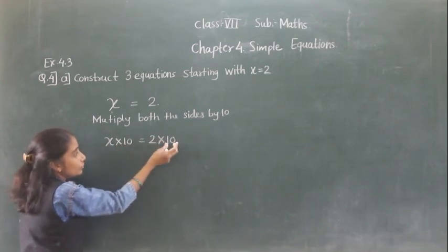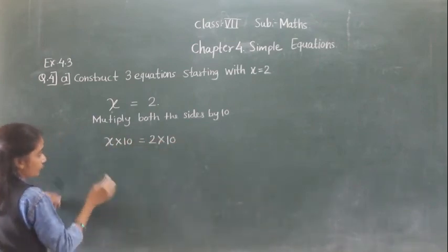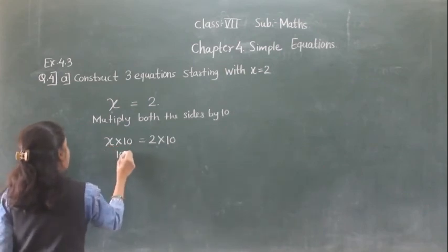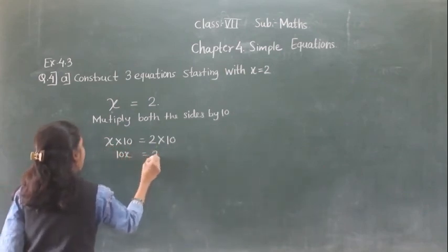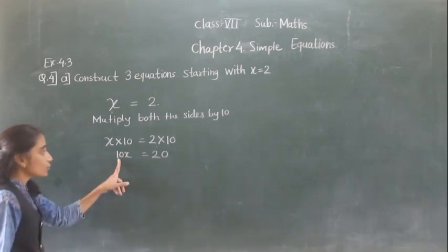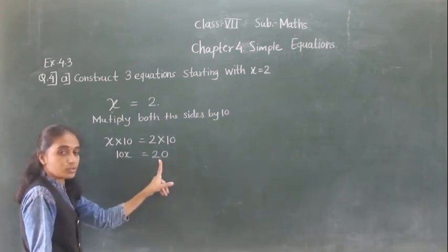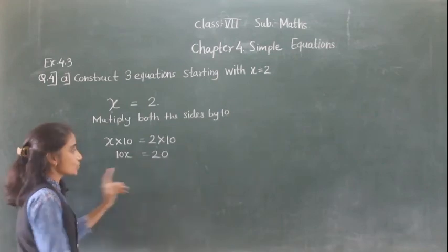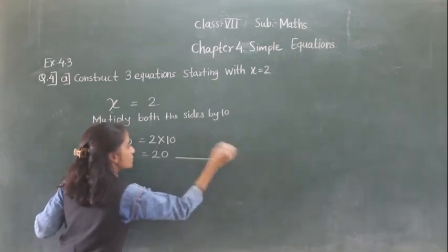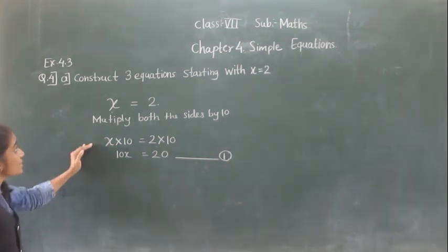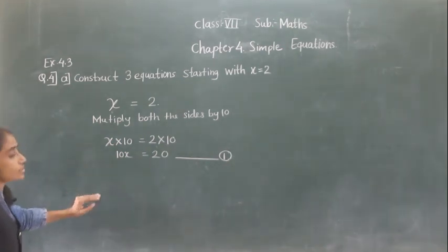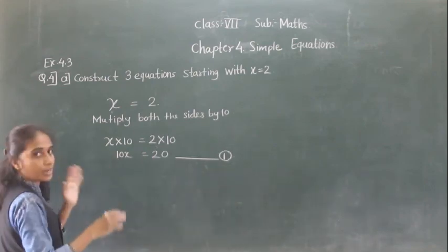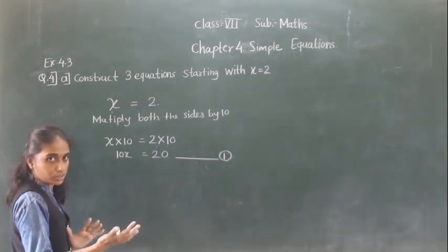Multiply both sides by 10. Left hand side has x, so 10 times x is 10x. Right hand side: 10 times 2 is 20. So the first equation we got is 10x is equal to 20. If you divide again by 10, you get x is equal to 2. This is the first equation.